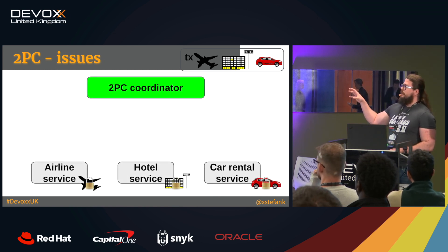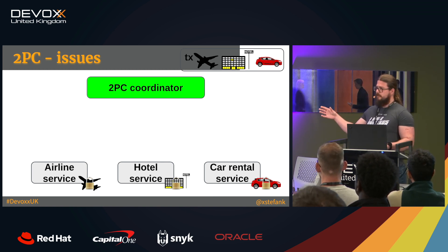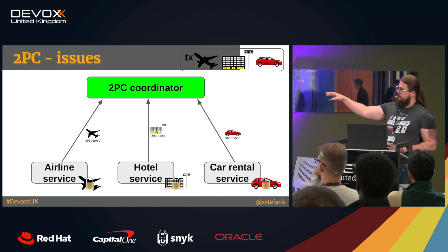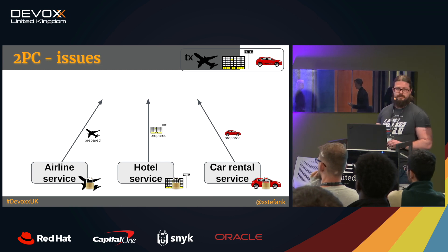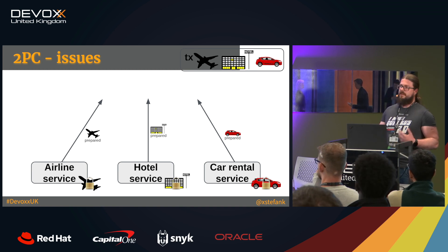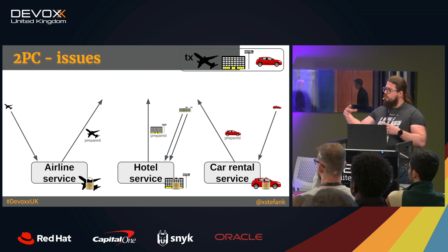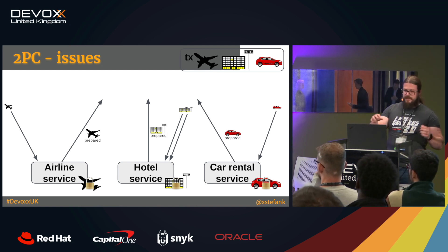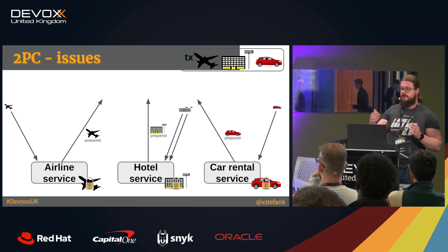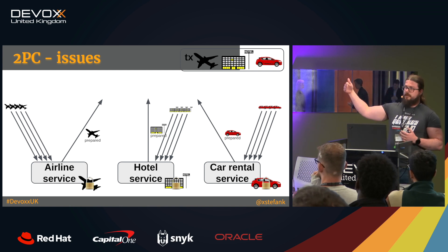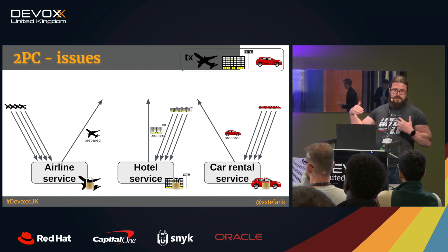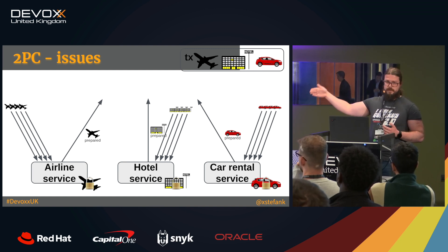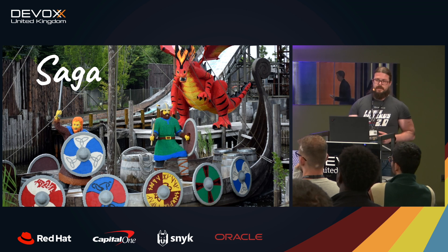The problem with 2PC, especially in distributed environments, is that the network is failing all the time. What happens if we take the logs on the resources, send 'prepared' messages to the coordinator, and the coordinator is not there anymore? The only thing we can do is retry those calls until the coordinator can decide the eventual outcome. Meanwhile, all those resources in individual services are locked. If there are multiple clients willing to pay for that last seat on the flight, they are unable to access it until the coordinator restarts. This is where Saga comes in to solve these issues.